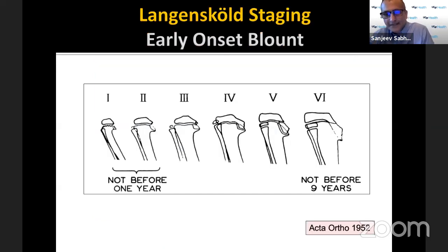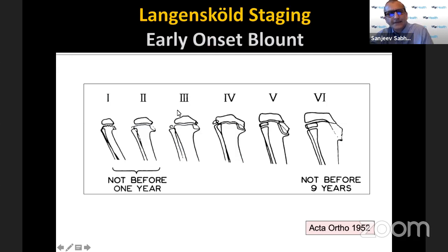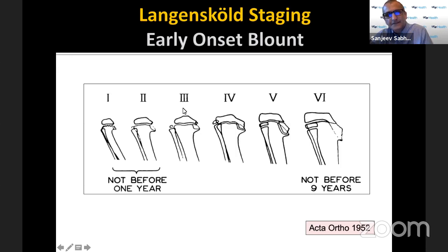The Langenskiöld classification defines six stages. Not every child with early onset Blount's will go through these stages, but it is age dependent. Stages one and two are definitely reversible. Stage three is debatable but most people think most cases are reversible. As you go to the higher stages the child gets older and reversibility gets less — to almost non-existent in stages five and six.